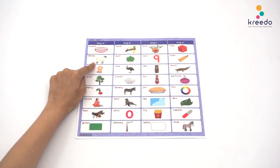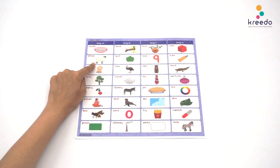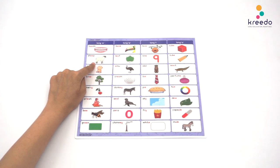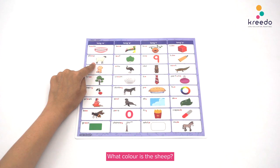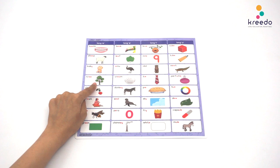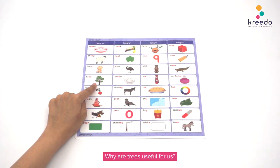Point to the sheep and ask what is this? Sheep. Here are a few questions to ask: What color is the sheep? What do we get from the sheep? Point to the tree and ask what is this? Tree. Here are a few questions to ask: Name some trees. Why are trees useful for us?